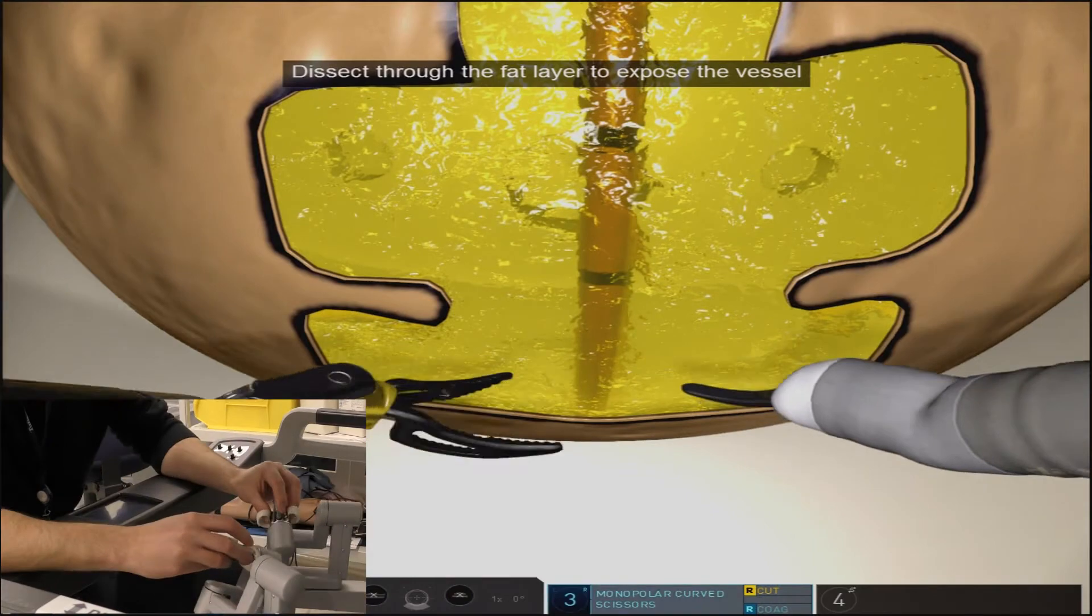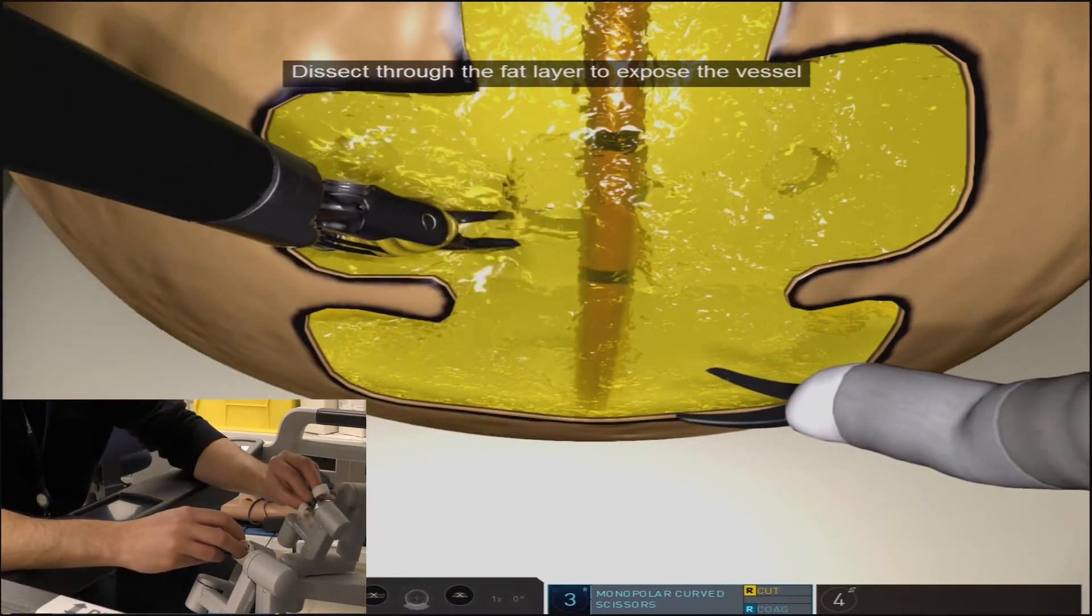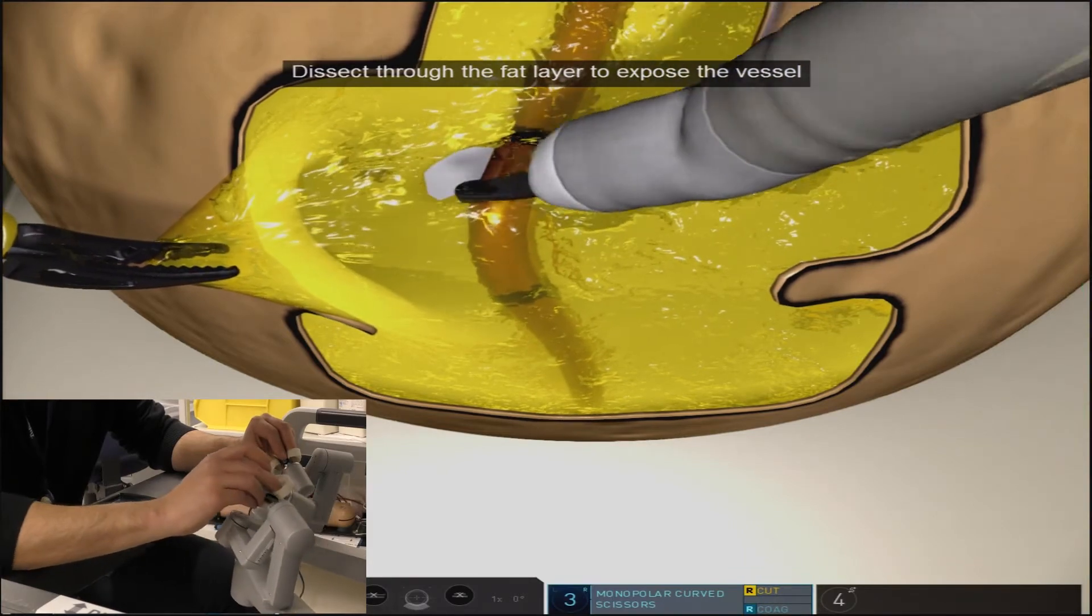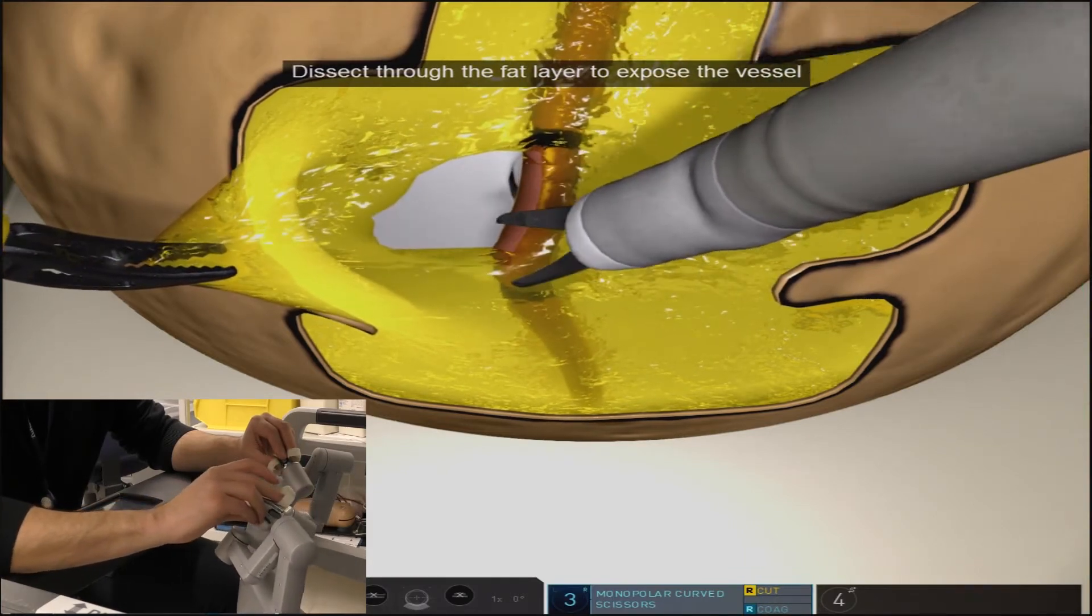Similar to the energy pedal exercises, your left hand has a grasper that does bipolar coagulation and the right hand has scissors that can do monopolar cut and coagulation.